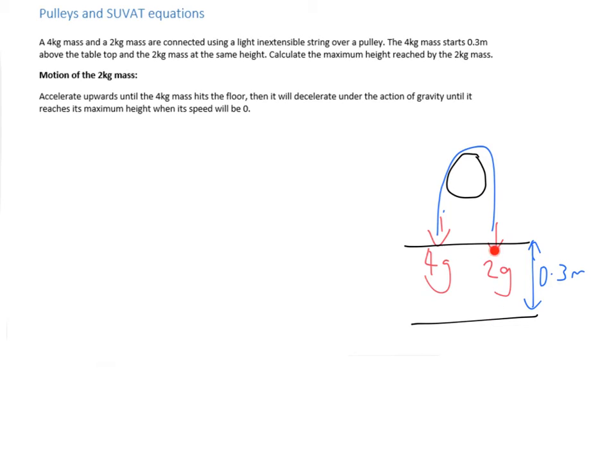To calculate the velocity, we're going to need the acceleration, because that's going to be constant, which is why we can use SUVAT equations. The resultant force acting on the object is going to be 4g minus 2g. You'll recognise these numbers from the last question. Which is 2g, which is 19.6 newtons.